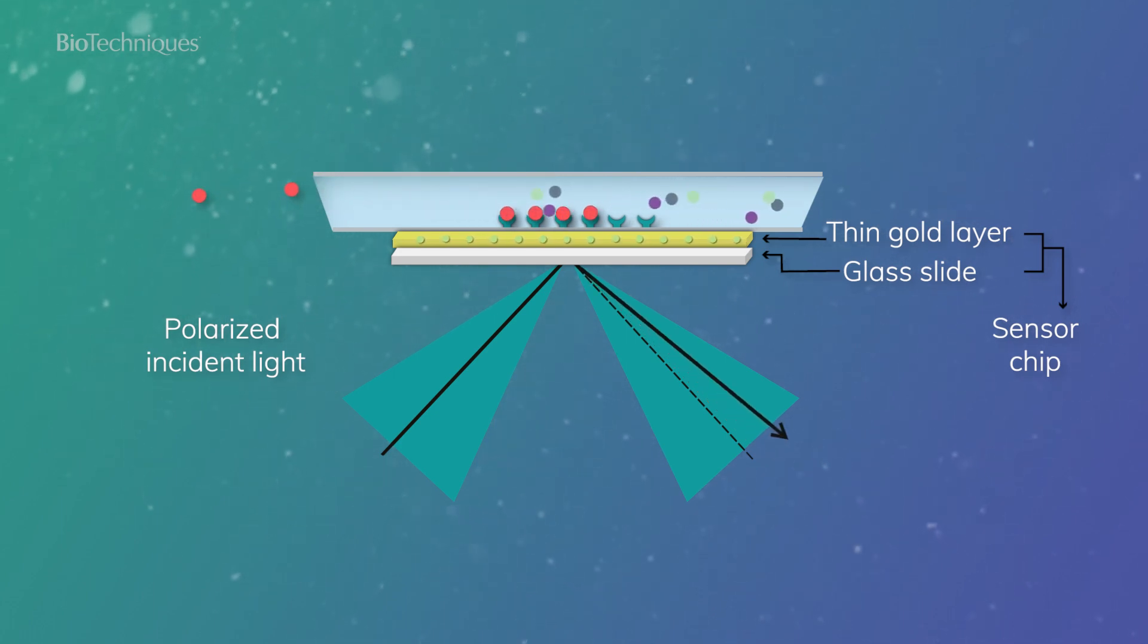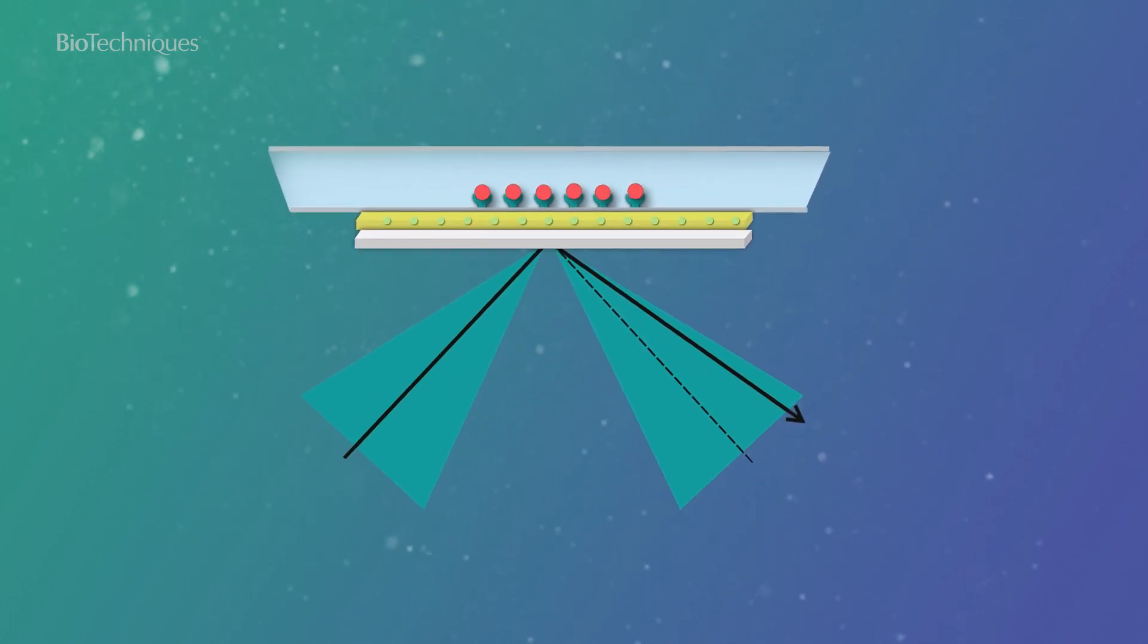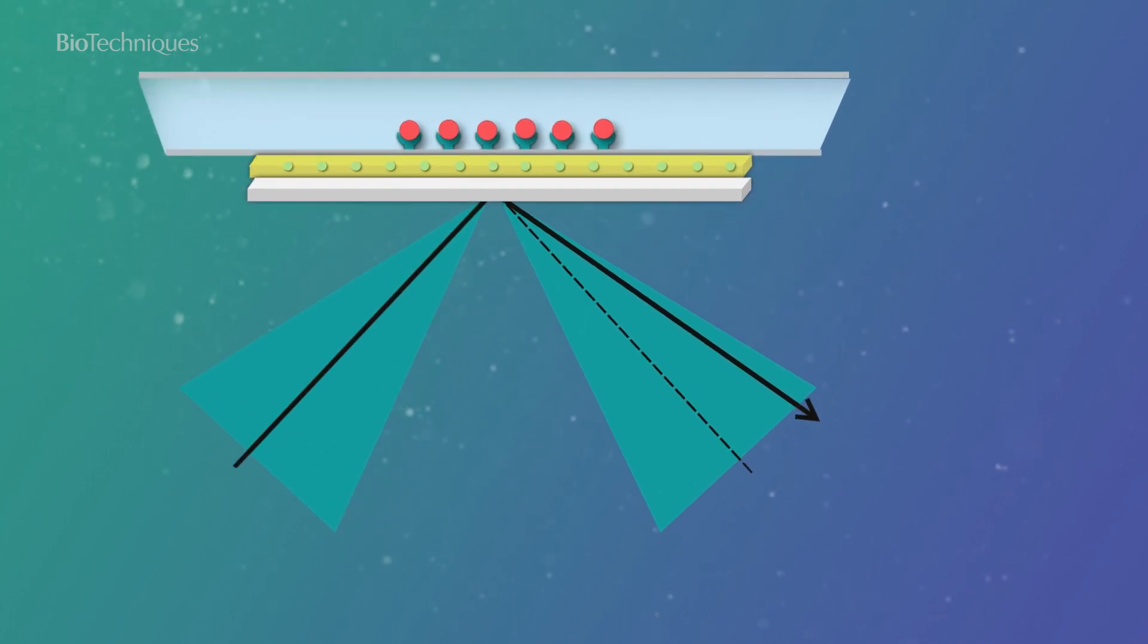When a solution containing an analyte flows over the sensor chip, the analytes may bind to the ligands on the chip, causing the refractive index to change at the sensor chip surface.